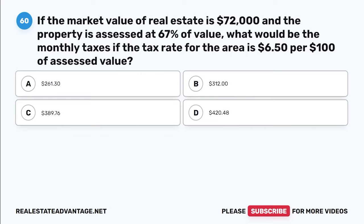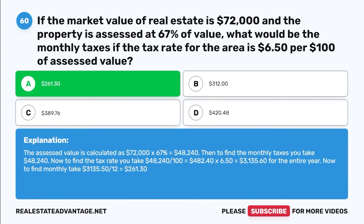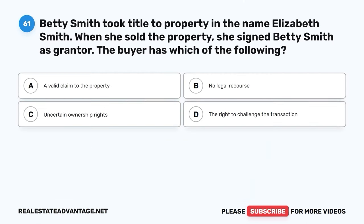Question 60. If the market value of real estate is $72,000 and the property is assessed at 67% of value, what would be the monthly taxes if the tax rate for the area is $6.50 per $100 of assessed value? A. $261.30. B. $312. C. $389.76. D. $420.48. The correct answer is A: $261.30. Assessed value: $72,000 × 67% = $48,240. Tax: $48,240 ÷ $100 = $482.40 × $6.50 = $3,135.60 per year. Monthly: $3,135.60 ÷ 12 = $261.30.